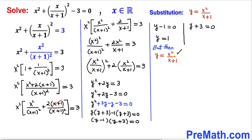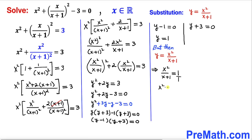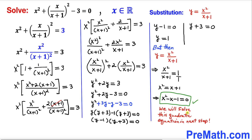Recalling our substitution y = x²/(x+1), and using y = 1, we get x²/(x+1) = 1. Cross-multiplying gives x² = x + 1, so moving everything to the left hand side, our quadratic equation is x² − x − 1 = 0, which we will solve in the next step.